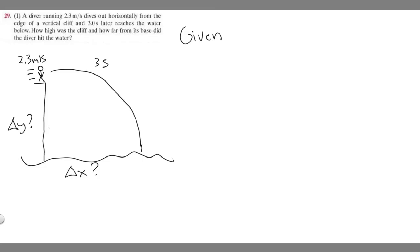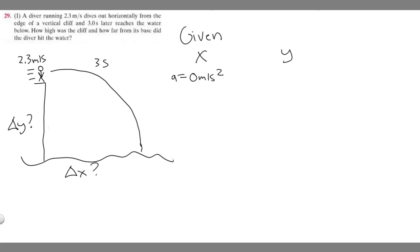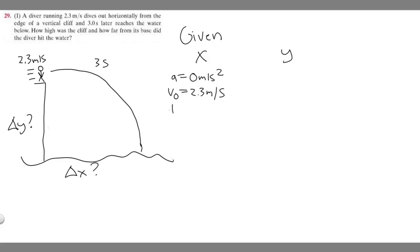For a problem like this, write down the given values separately for the x and y directions. In the x direction: acceleration is zero meters per second squared, initial velocity v-sub-zero is 2.3 meters per second, time is three seconds, and delta x is what we're solving for — delta x equals question mark.